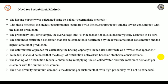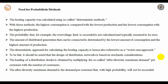The amount of distributed generation that can be connected is determined by the lowest amount of consumption at the highest amount of production. The deterministic approach for calculating the hosting capacity is also referred to as the worst case approach. The feeder load is obtained by multiplying the so-called after diversity maximum demand per customer with the number of customers — that is, the demand per customer that with high probability will not be exceeded.